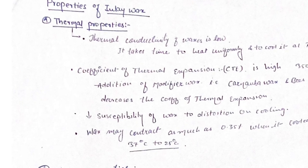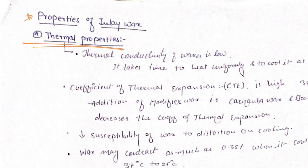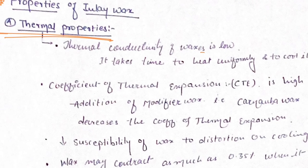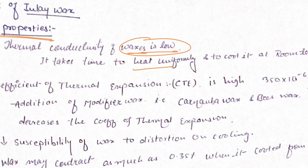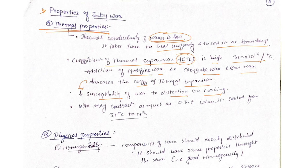Next, properties of inlay wax: thermal properties and physical properties. Thermal conductivity of wax is low, so it takes time to heat uniformly and cool at room temperature. Coefficient of thermal expansion is high, 350 × 10⁻⁶ per degree centigrade. Addition of modifier wax like carnauba wax and beeswax decreases the coefficient of thermal expansion and decreases susceptibility of wax to distortion on cooling. Wax may contract as much as 0.35% when cooled from 37°C to 25°C.